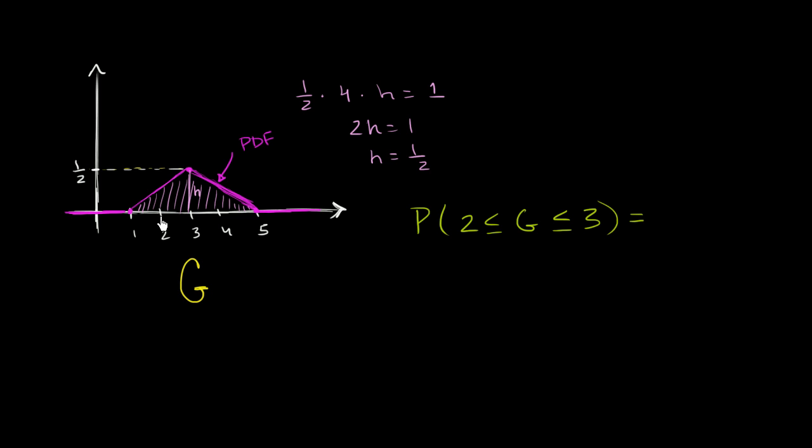Well, once again, we're talking about the range. It can be anywhere between 2 and 3, including 2 and 3. So we're essentially talking about the area under the curve between 2 and 3. So we're talking about this area right over here, which is a trapezoid.